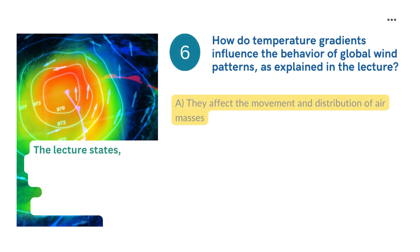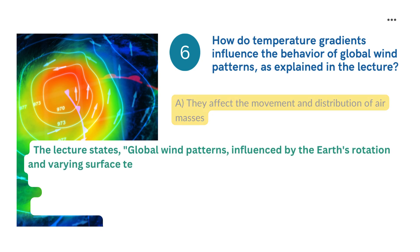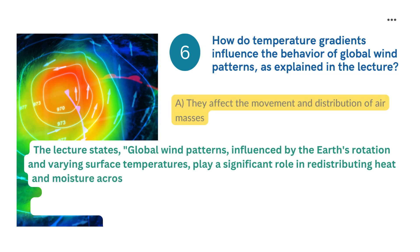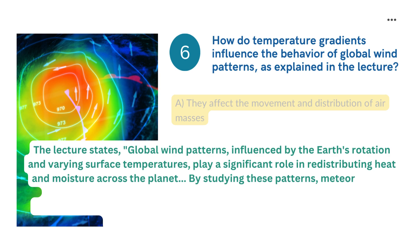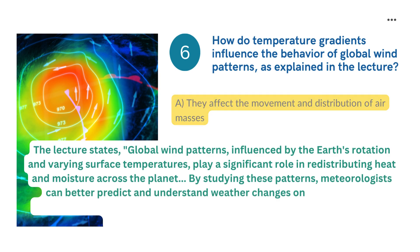Answer 6: The lecture states that global wind patterns, influenced by the Earth's rotation and varying surface temperatures, play a significant role in redistributing heat and moisture across the planet. By studying these patterns, meteorologists can better predict and understand weather changes on a global scale. Temperature gradients affect the movement and distribution of air masses, which in turn influence global wind patterns.